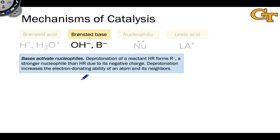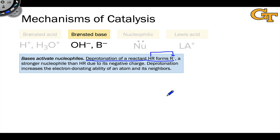The idea of Brønsted base catalysis is on some level the opposite of Brønsted acid catalysis. Rather than protonating the electrophile, the purpose of a Brønsted base catalyst is to deprotonate the nucleophile and thereby activate it. The deprotonation of a nucleophile bearing an acidic hydrogen HR generates R⁻, and converting a neutral nucleophile into one with negative charge makes it a much stronger electron donor and increases its nucleophilicity. Put generally, bases activate nucleophiles — this is the key role of a Brønsted base catalyst in a base-catalyzed reaction.